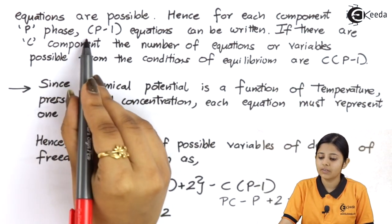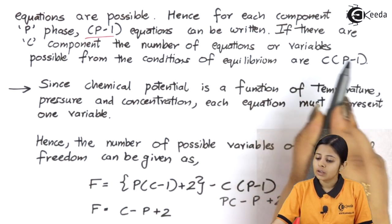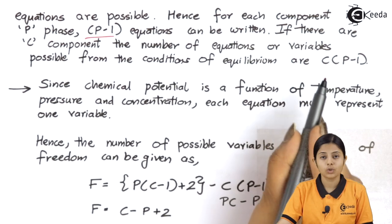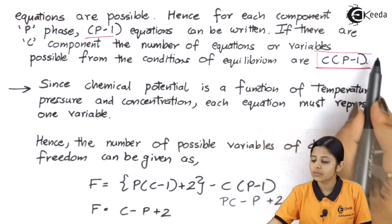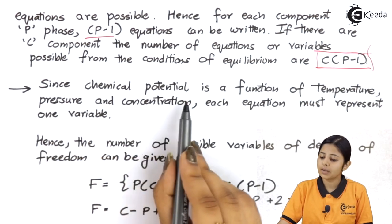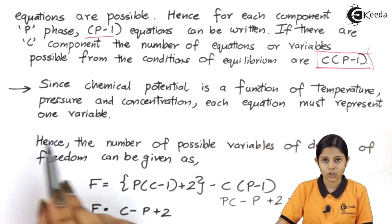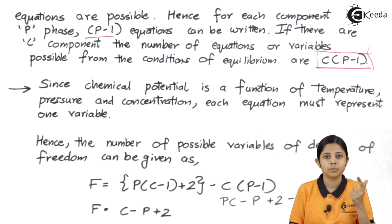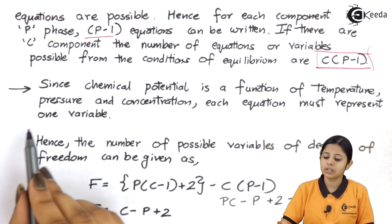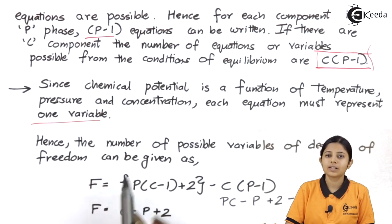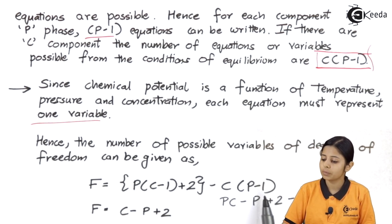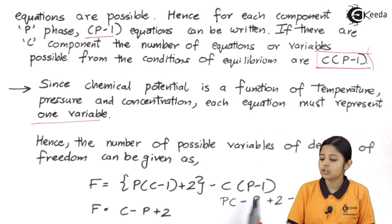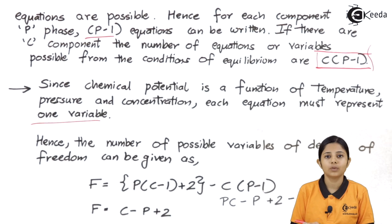Hence, for each component of P phases I will write P−1 equations. If there are C components, the number of equations or variables possible will be C(P−1). Since chemical potential is a function of temperature, pressure, and concentration, we have only three variables. Each equation must be represented by only one variable. Now let us see the degrees of freedom: we have two expressions — the first is C(P−1), and the second is P(C−1) plus 2. We will combine both to get the final phase rule.